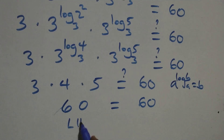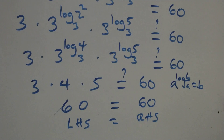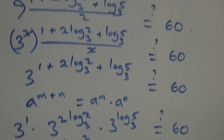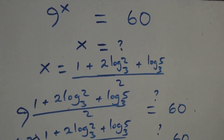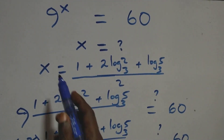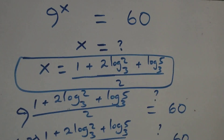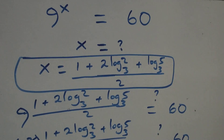Since left-hand side equals right-hand side, we conclude that x = (1 + 2·log_3(2) + log_3(5)) / 2 satisfies the given problem. Thank you for watching — don't forget to subscribe, turn on the notification bell, share the video, and leave a comment. See you next class!